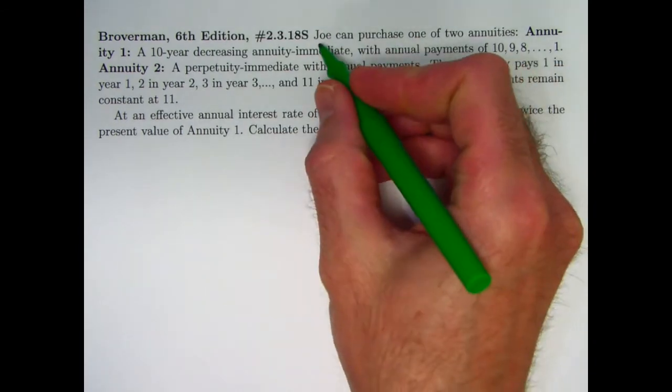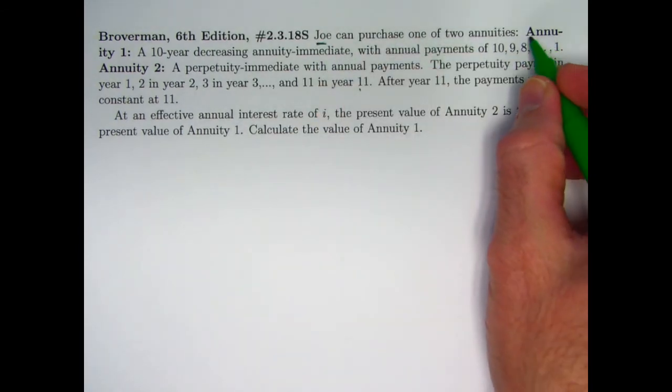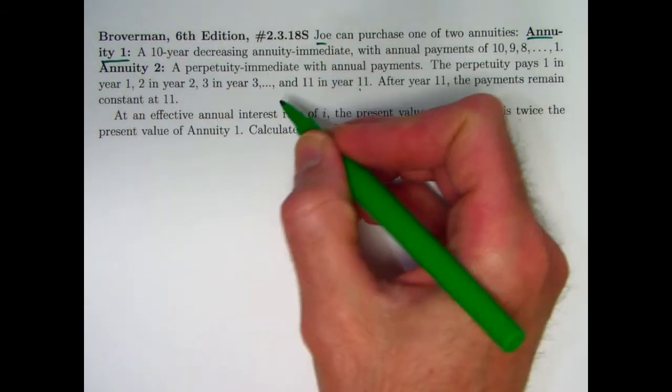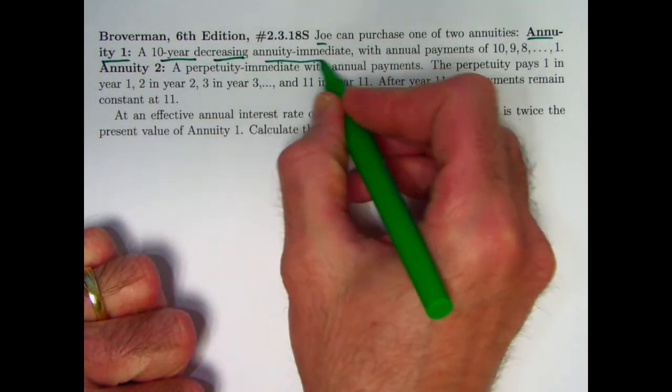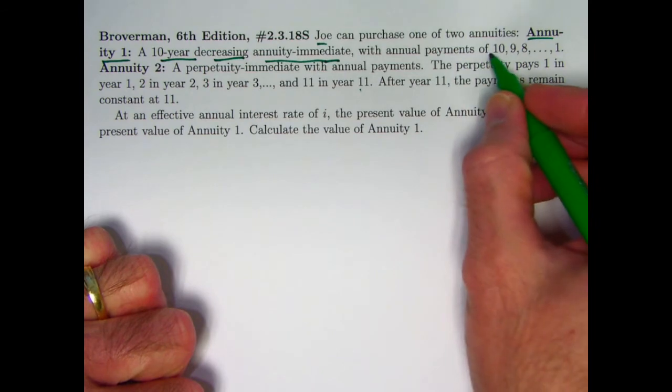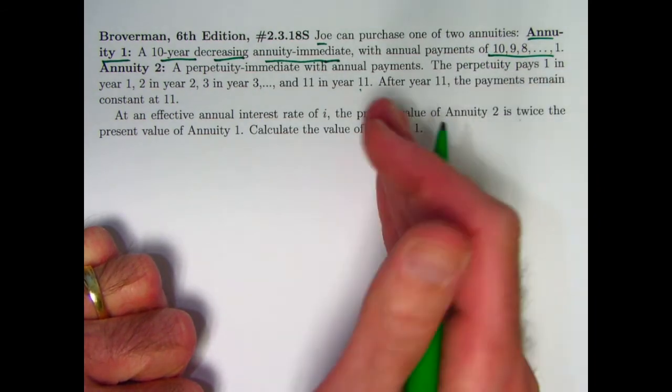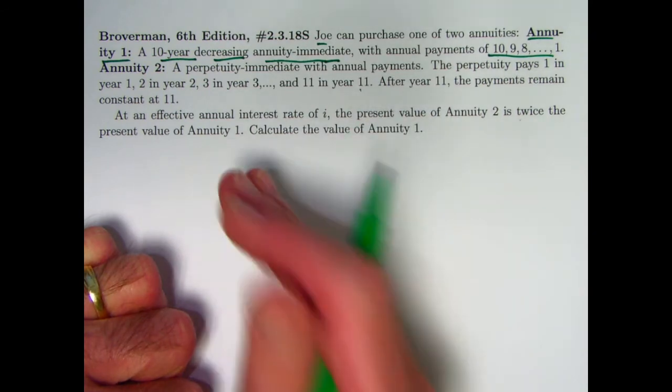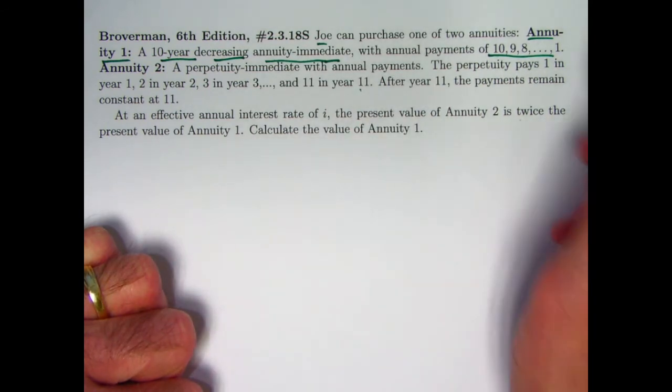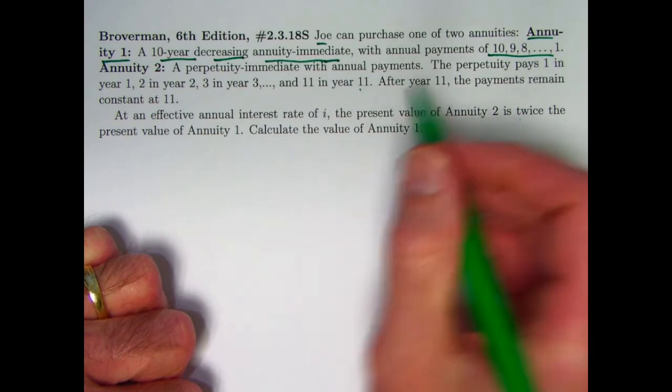So we've got this person Joe and he can purchase one of two annuities. Annuity 1 is a 10-year decreasing annuity immediate with annual payments of 10 down to 1. So the first payment of 10 would be at time 1, one period after the present at time 0. And we have this last payment of 1 at time 10.